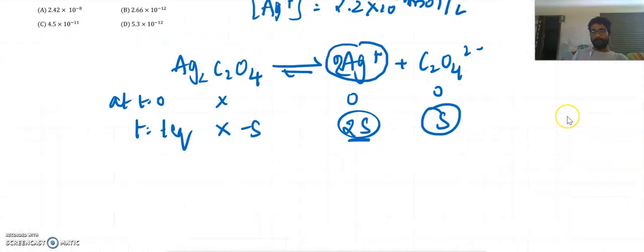Here the solubility product Ksp, Ag2C2O4 is solid, so it will not come under our Ksp.